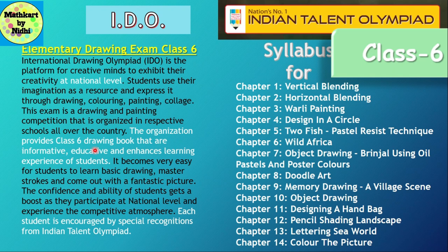For Class 6, there will also be an Elementary Drawing Exam at national level. The organization provides classic drawing books that are informative, educative, and enhance learning experience. Each student is encouraged by special recognition from the Talent Olympiad. The syllabus for Class 6 is: vertical blending, horizontal blending, worldly painting, design in the circle, two fish, pastel resist technique, while Africa object drawing, brinjal using oil pastel and poster colors, doodle art, memory drawing, our village scene, object drawing, designing a handbag, pencil shading landscape, lettering, sea world, and color the picture.